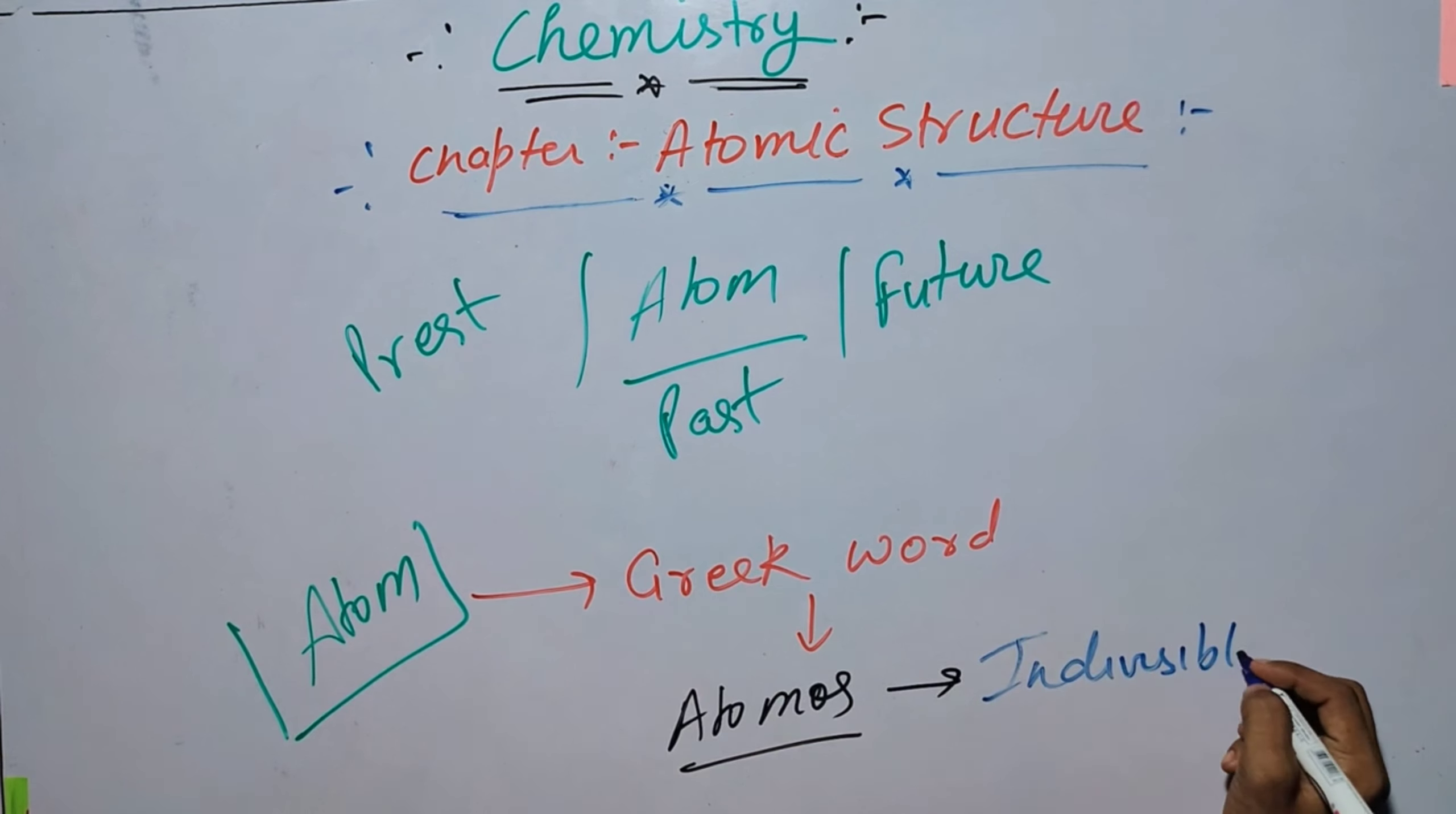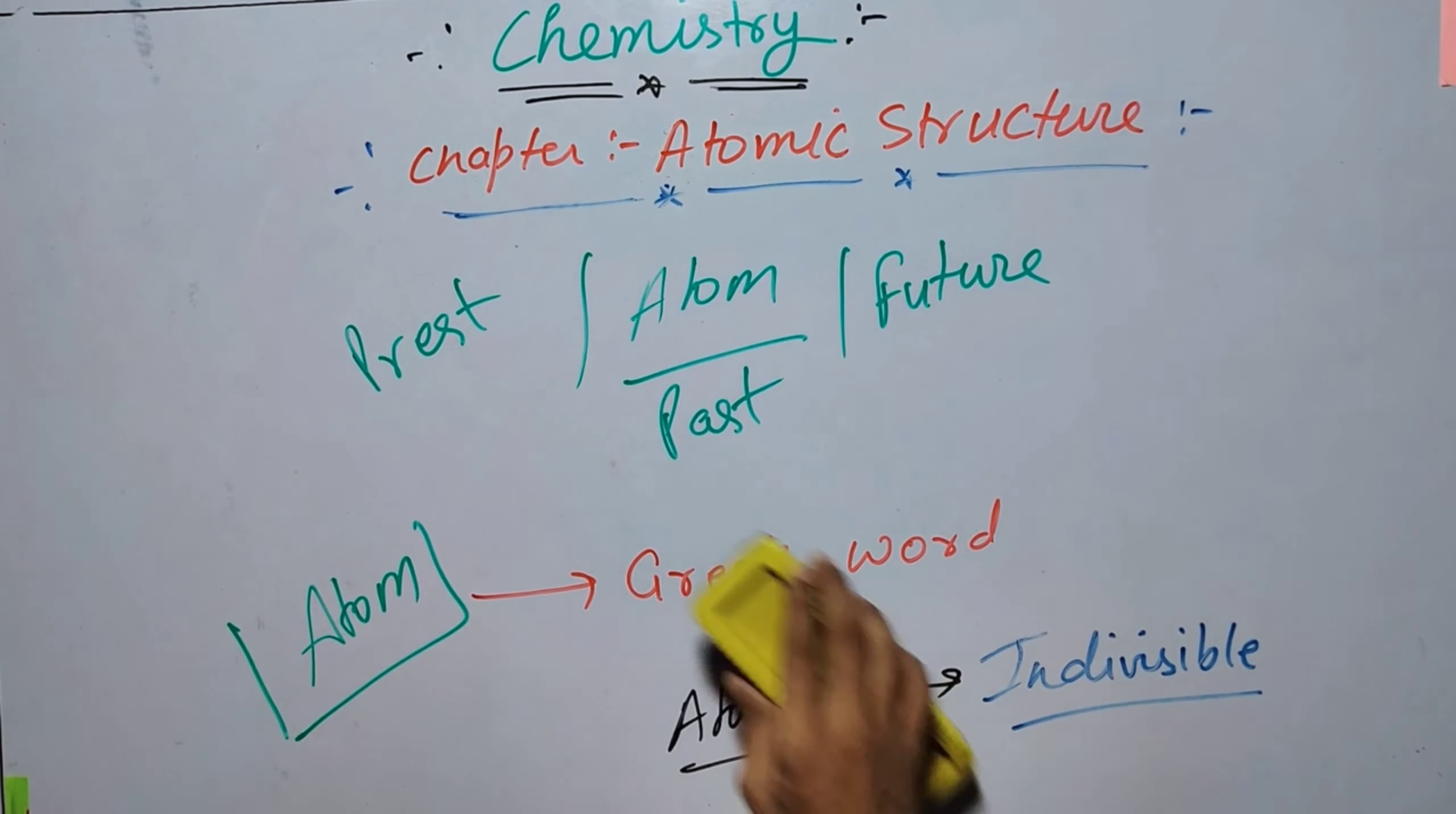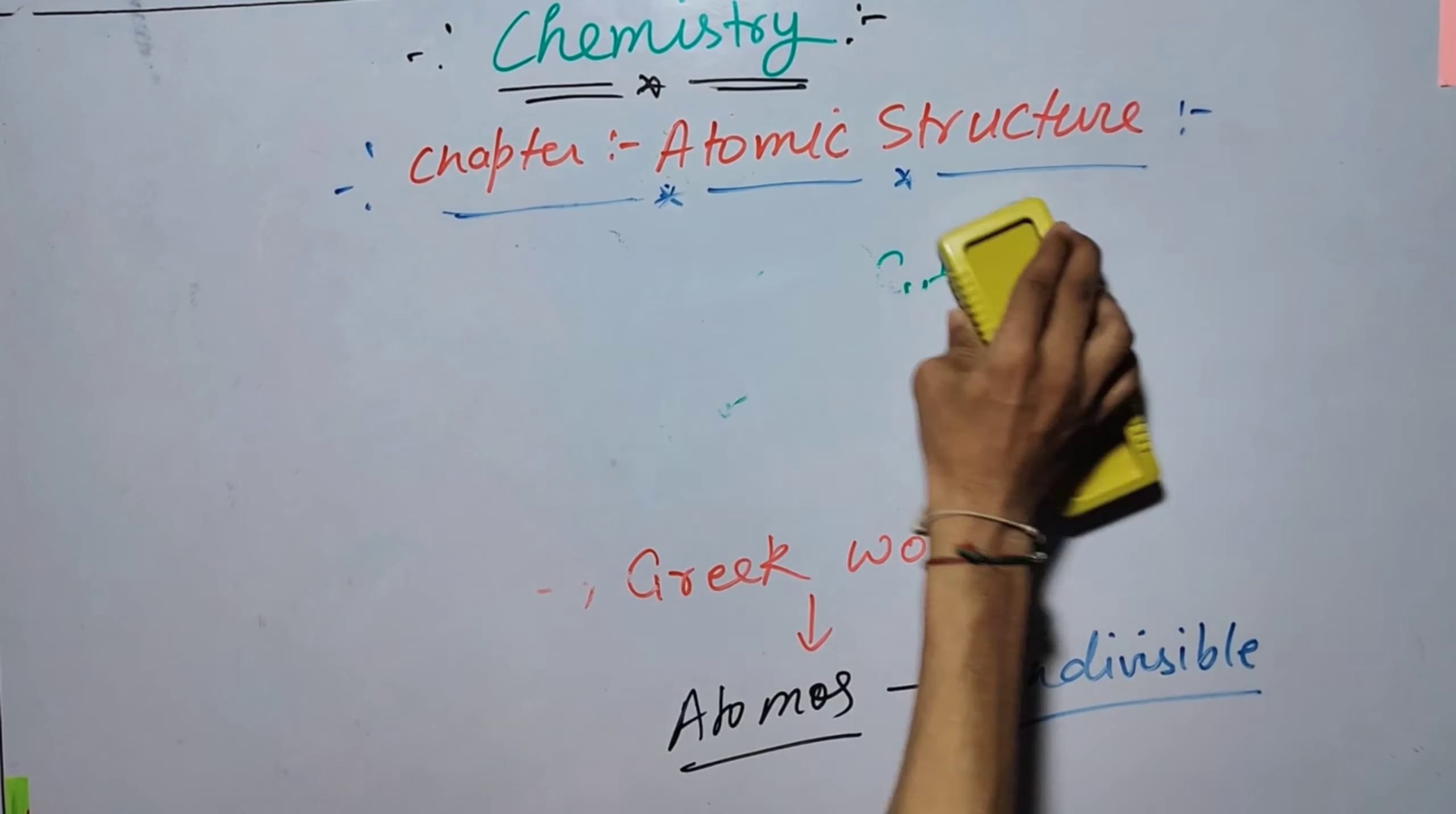Which is unbreakable. Atomos means indivisible, which is unbreakable - a Greek word coined by Democritus.